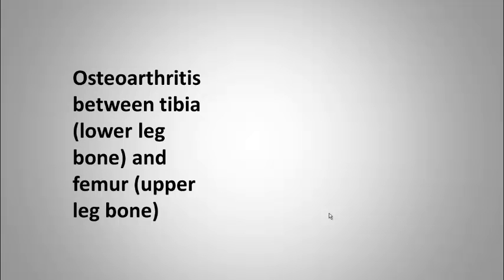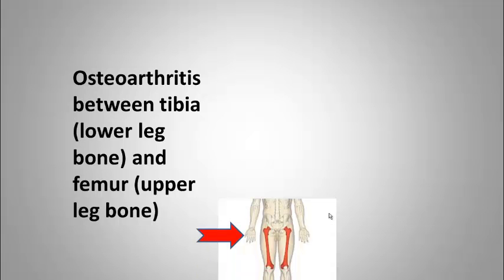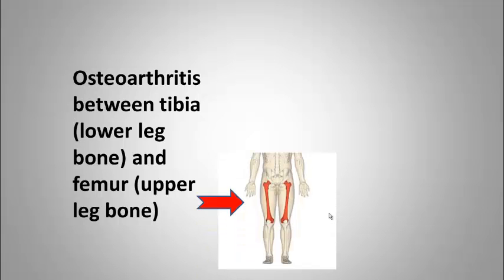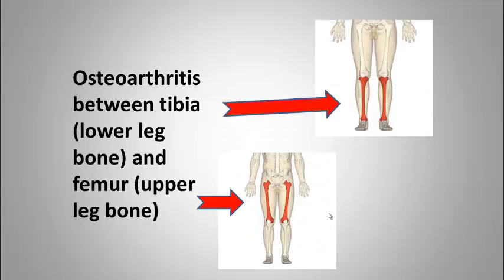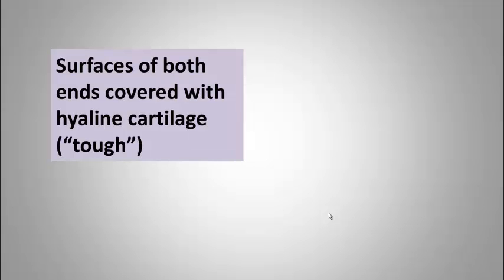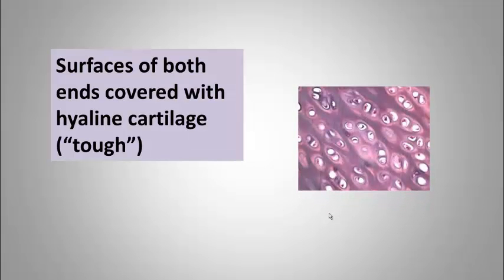The most common presentation of osteoarthritis of the knee is involvement of the tibiofemoral joint, the space between the femur, the upper leg bone, and the tibia, the larger of the two lower leg bones.